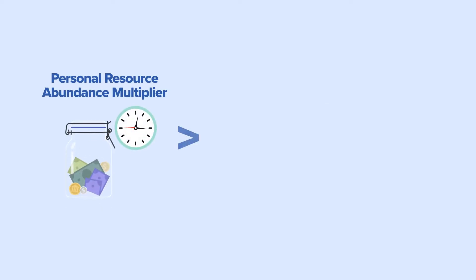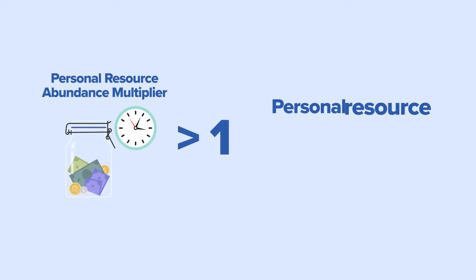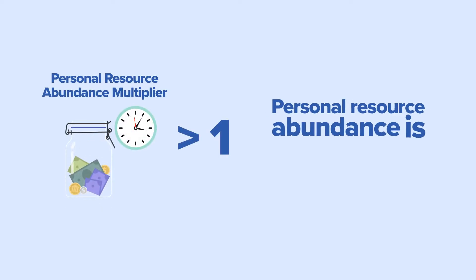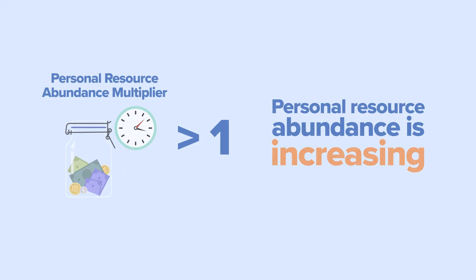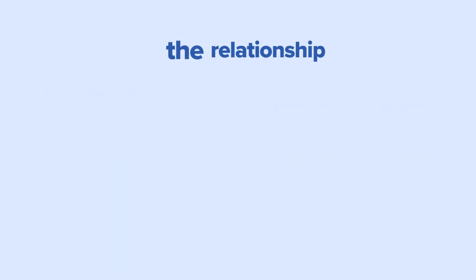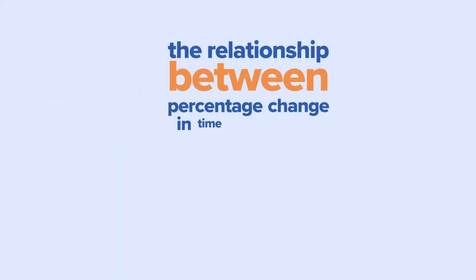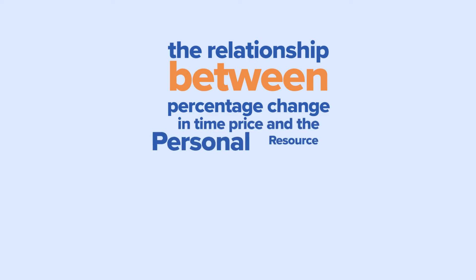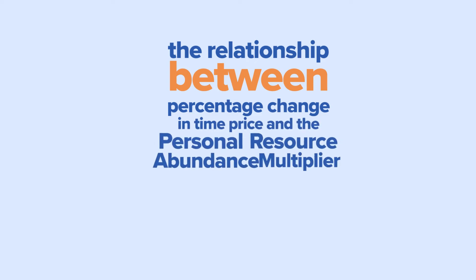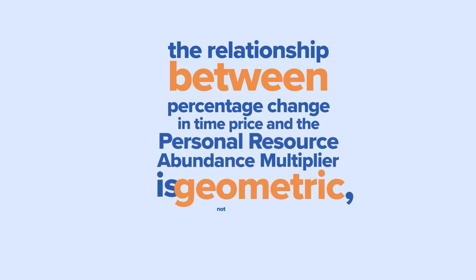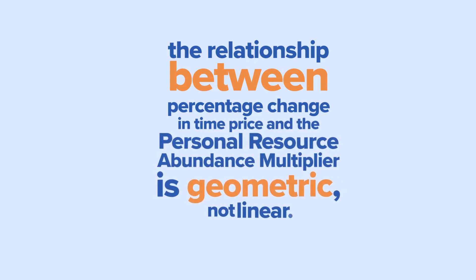As long as the multiplier is greater than 1, Personal Resource Abundance is increasing. Note that the relationship between percentage change in time price and the Personal Resource Abundance Multiplier is geometric, not linear.